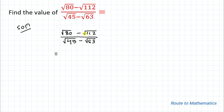All of the numbers present in the given problem are imperfect squares, so we'll find the square root of each number through the prime factorization method. We'll start by finding the value of root 80.